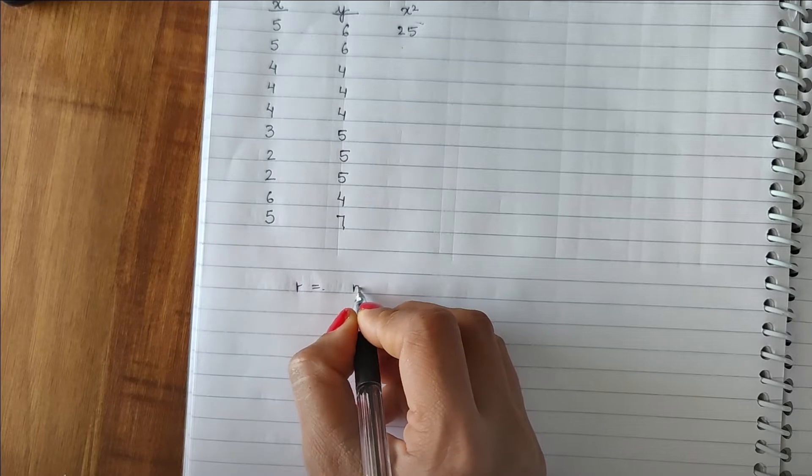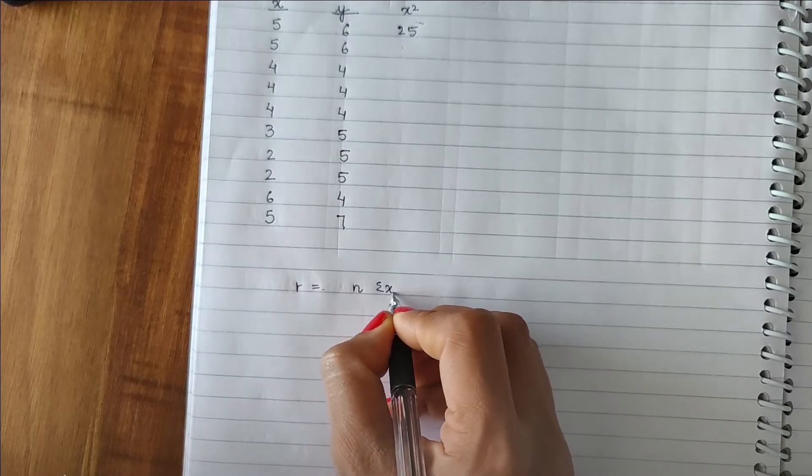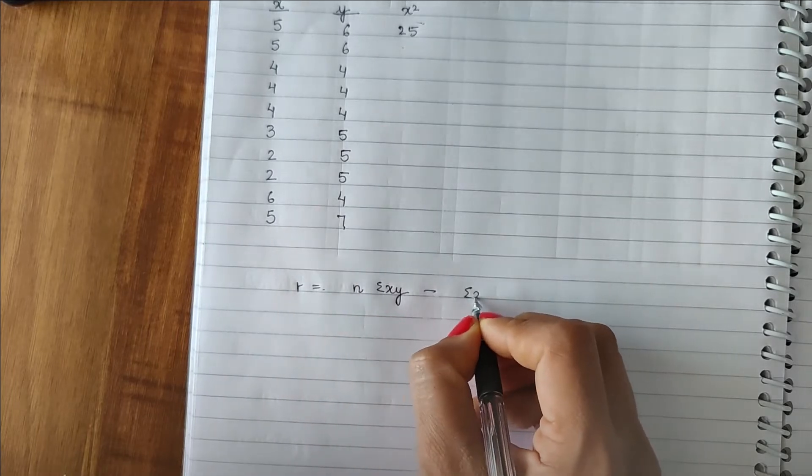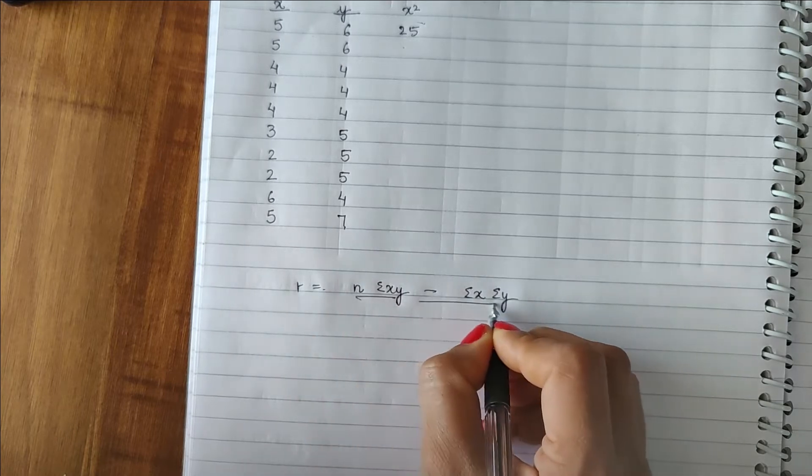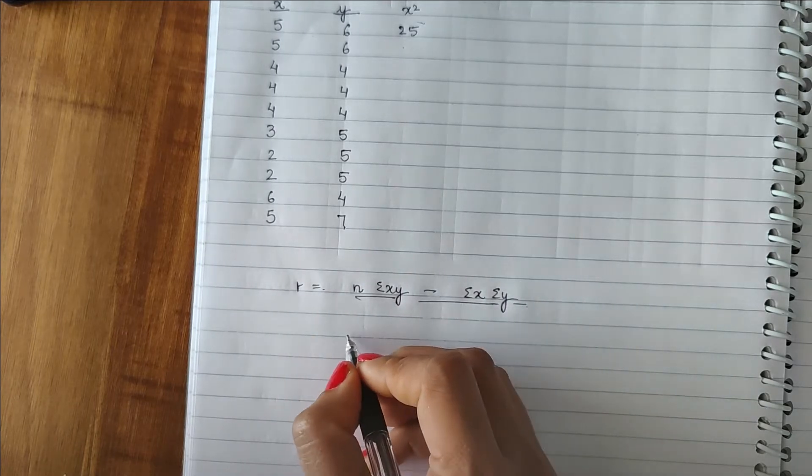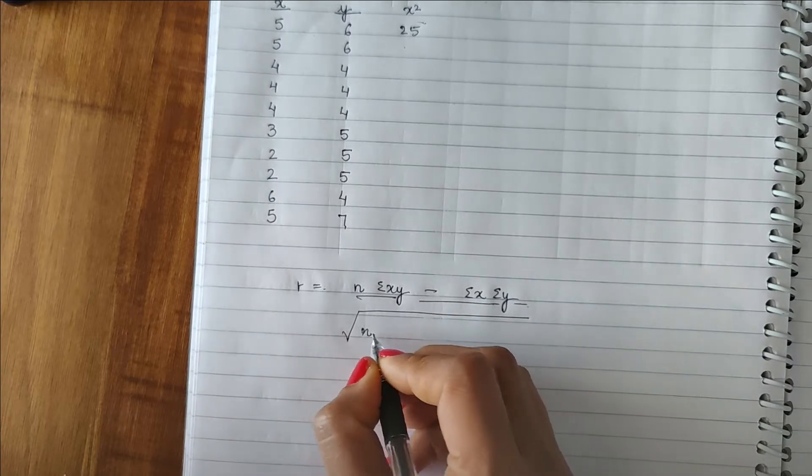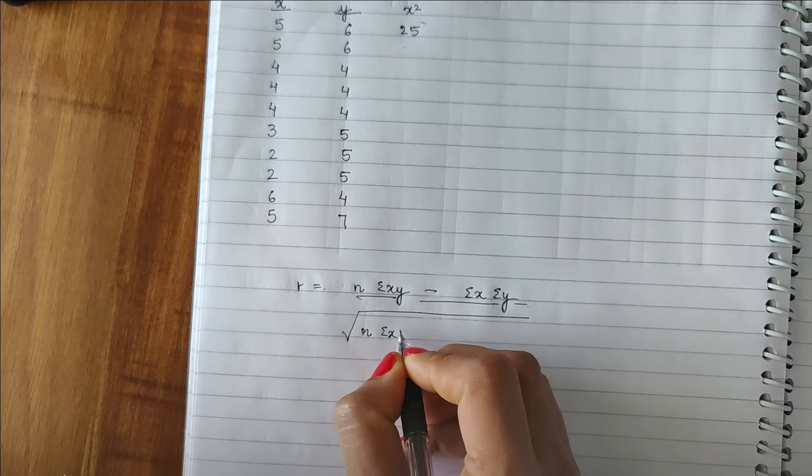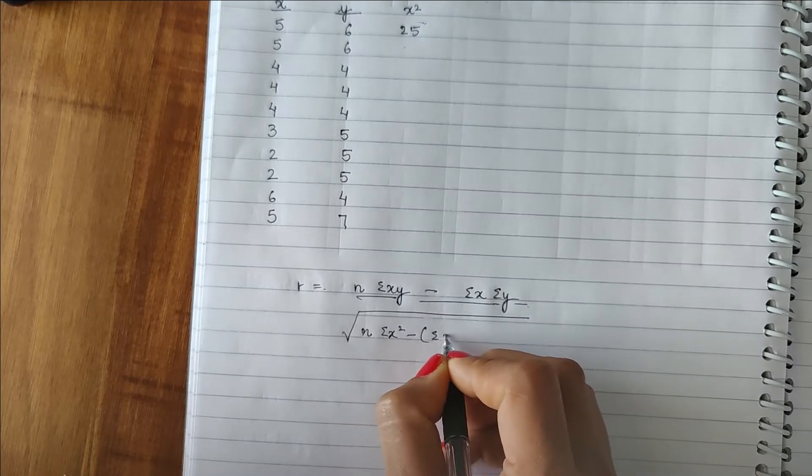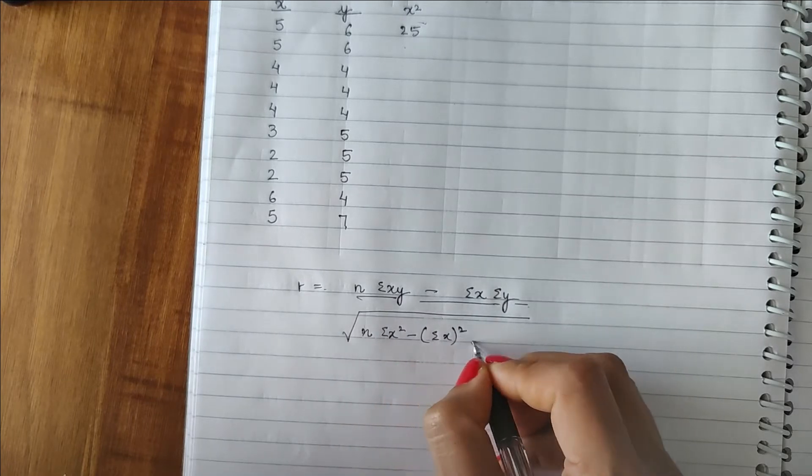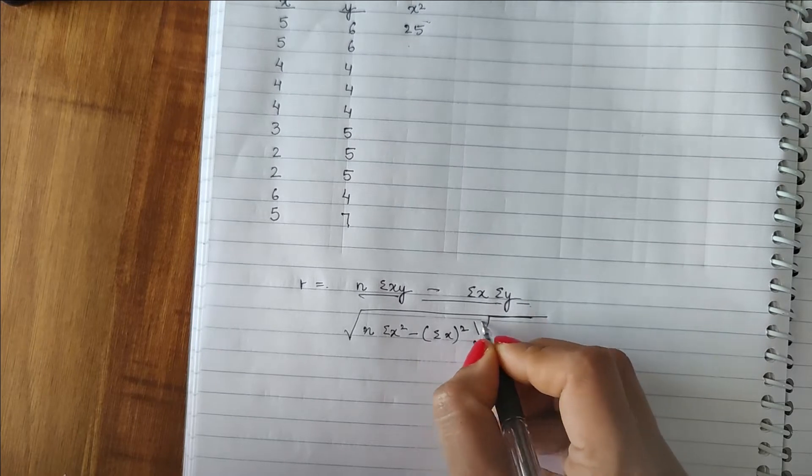We need r is equal to n times summation XY minus summation X times summation Y. This is sigma or summation, you can check from my older videos. Again I am just going to explain, this means multiplication sign.